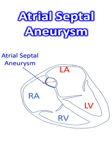Type 1a was fossa ovalis aneurysm with no motion during the cardiorespiratory cycle. Type 1b showed rapid phasic oscillation in inspiration, usually confined to the right atrium. Type 2 had markedly redundant fossa ovalis membrane protruding maximally into the left atrium, with a total amplitude of phasic excursion more than 1.5 centimetres.